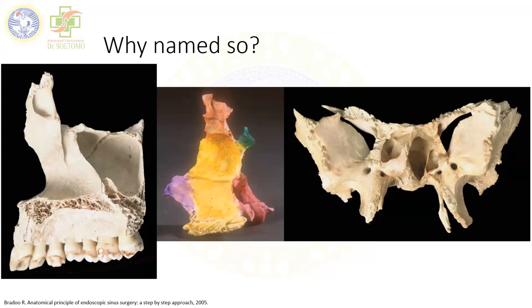The key point is understanding the surgical anatomy, including the extension of the PPF, which will lead to safe surgery and successful outcome. The PPF is a protected area built up by three bones: the maxillary bone, the palatine bone in the middle, and posteriorly the sphenoidal bone. From the maxillary bone there is the tuberosity of maxilla.